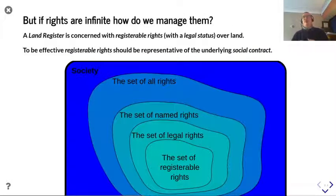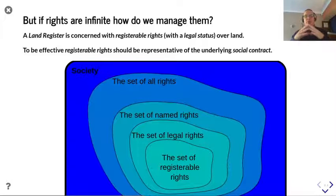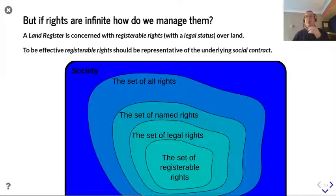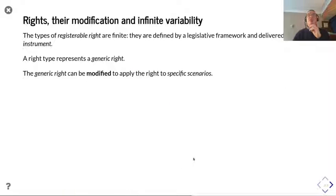So if the rights are infinite, how do we manage them? This is where we get back to the conversation about the social contract that we had in the earlier slide, in that all rights are a reflection of social norms. And as those rights become more important, they form part of that legal set of registrable rights.